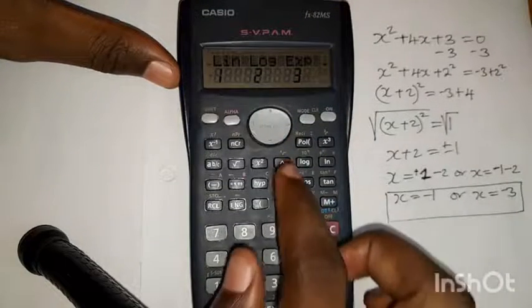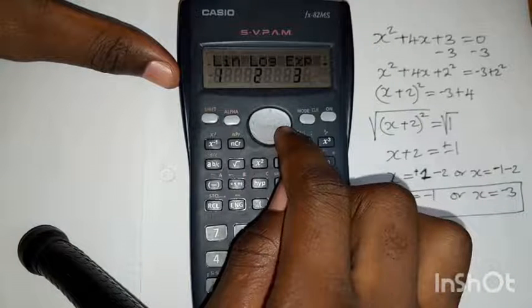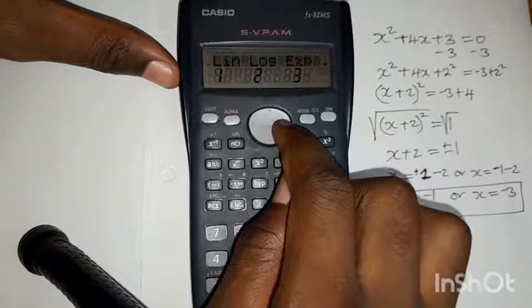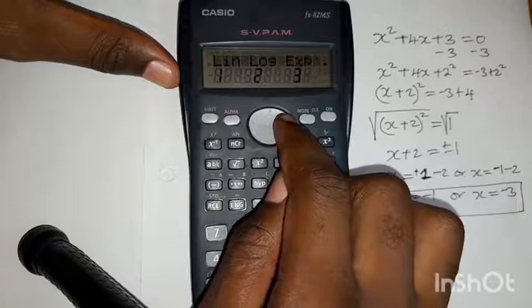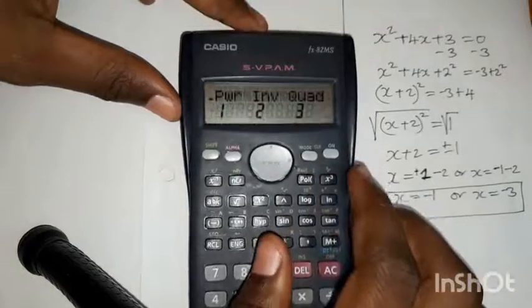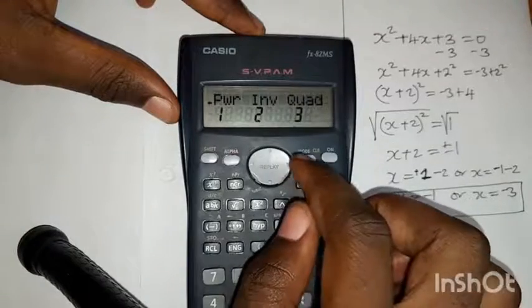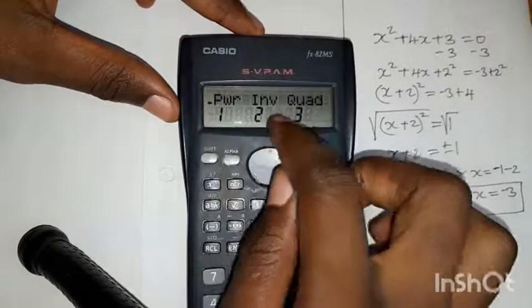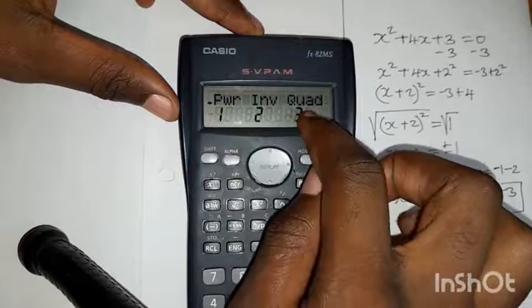After clicking 3, you come to this right key here. Press the right key like this. Now you see that after pressing the right key, you have these options.